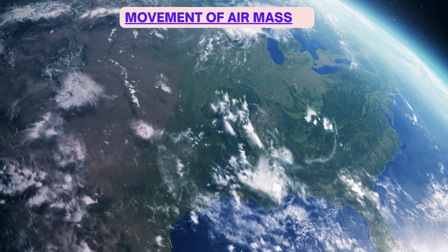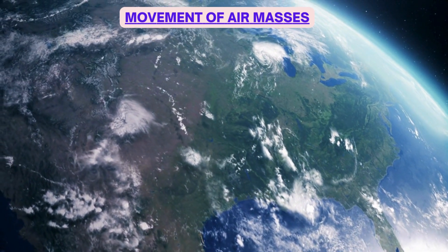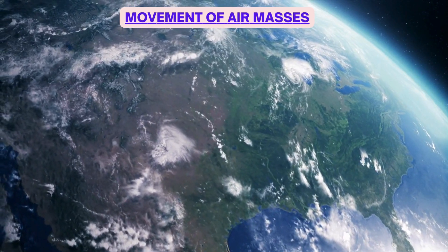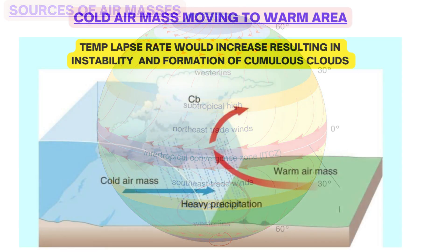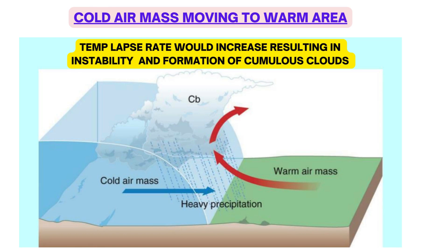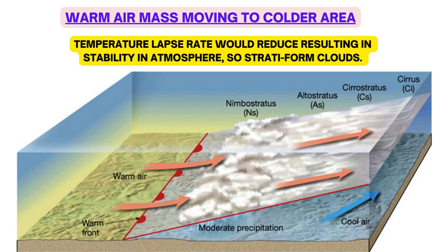As air masses move across the planet due to winds, they move over different profiles of ground or sea and their properties change. At source, all air masses must be stable to acquire properties from the surface below. A cold air mass moving to a warmer area will become warm — the temperature lapse rate will increase, resulting in instability, formation of cumulus clouds, and reduced relative humidity. A warm air mass moving towards a colder area will become cold — the lapse rate reduces, resulting in stability, stratiform clouds, and higher relative humidity.